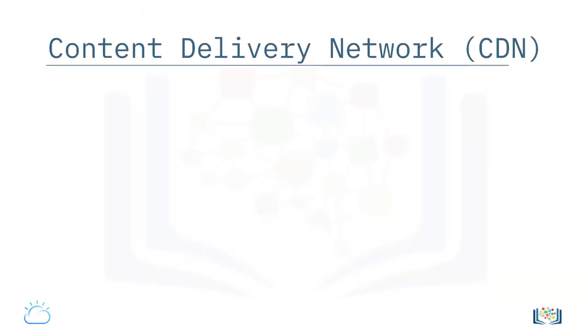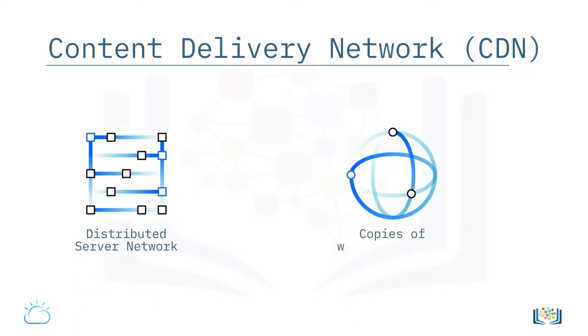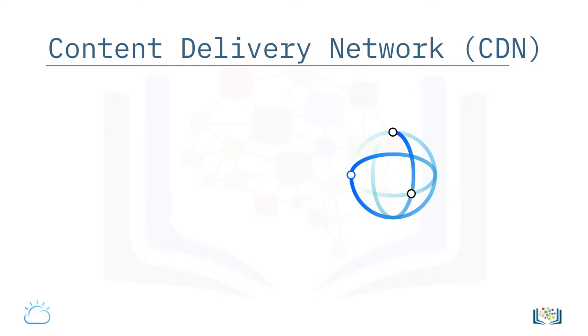A content delivery network, or CDN, is a distributed server network that delivers temporarily stored or cached copies of website content to users based on the user's geographic location.